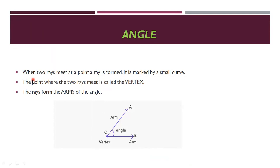Next is angle. When two rays meet at a point, an angle is formed. It is marked by a small curve. When these two rays meet, we get one angle marked with a small curve. The point where the two rays meet is called the vertex. The rays form the arms of the angle.